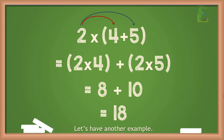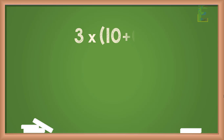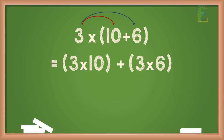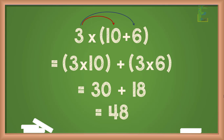Let's have another example. What will be the answer if we multiply the whole number 3 by the group (10 plus 6)? To solve this, we distribute the whole number 3 to each member of the group individually. The equation becomes 3 times 10 plus 3 times 6, and the answer is equal to 48.